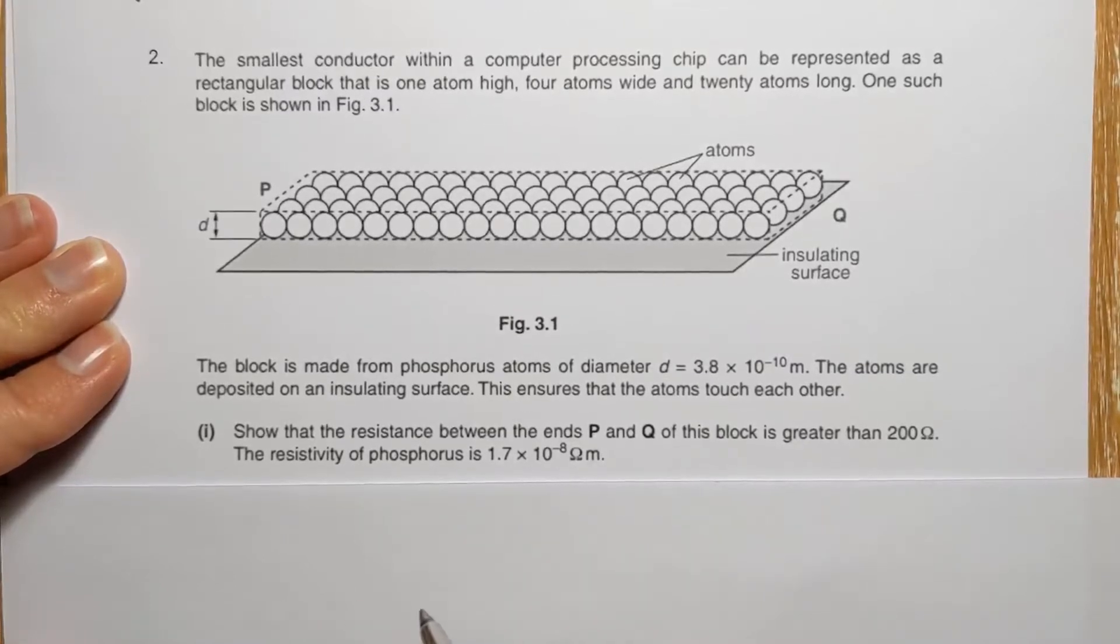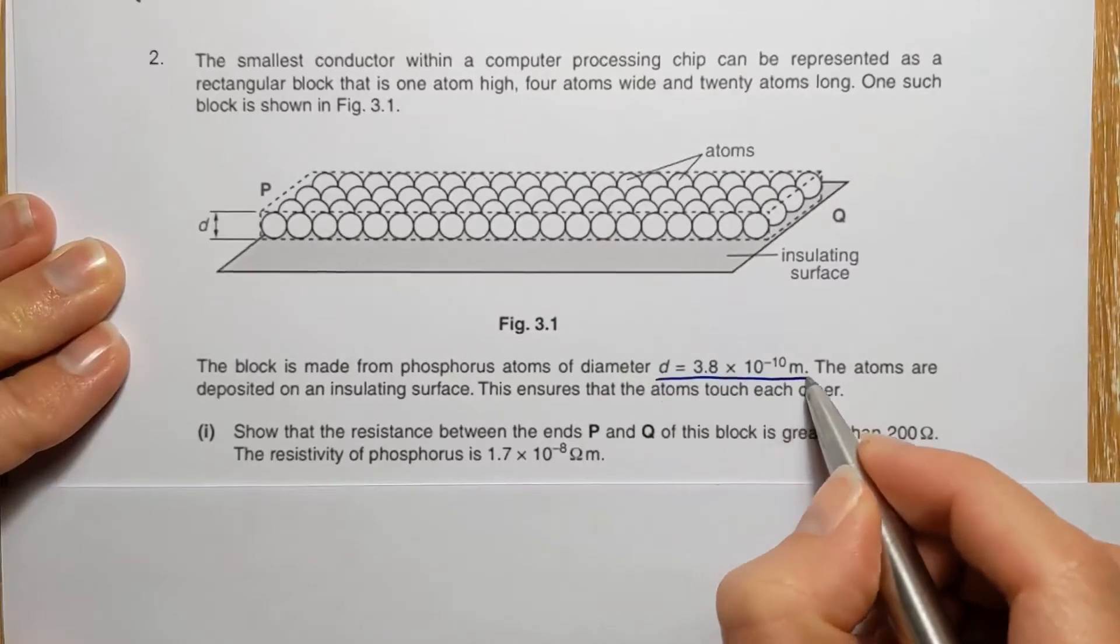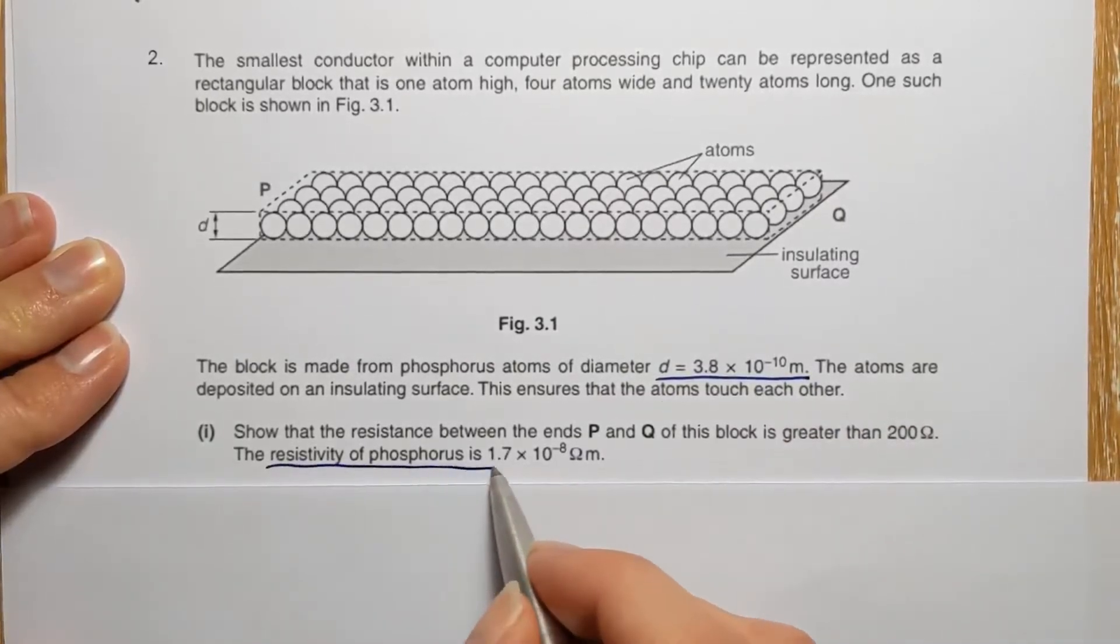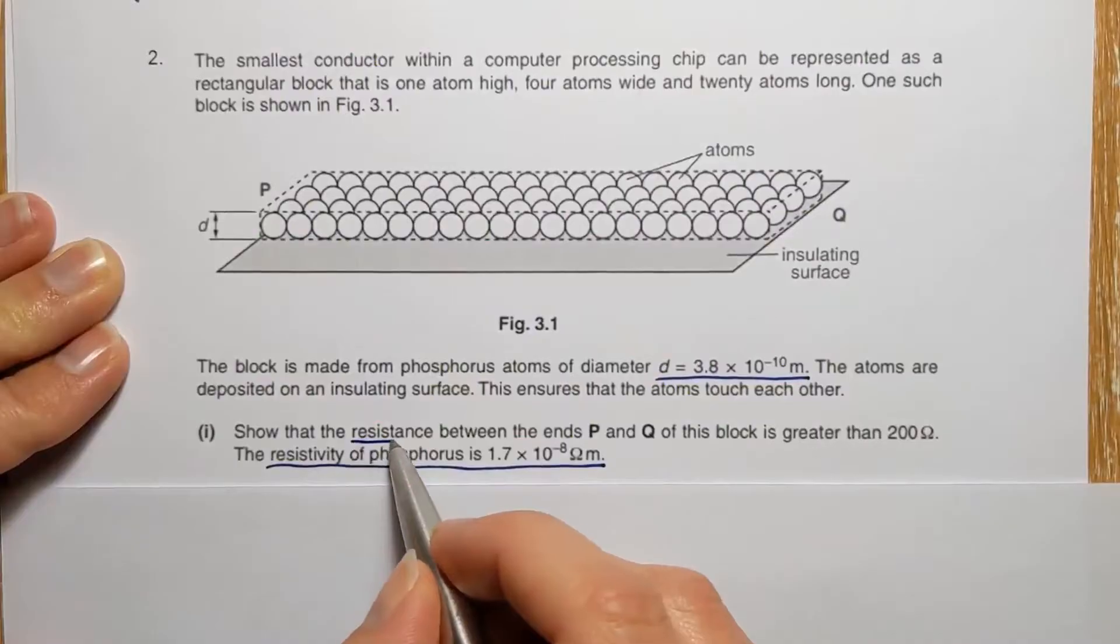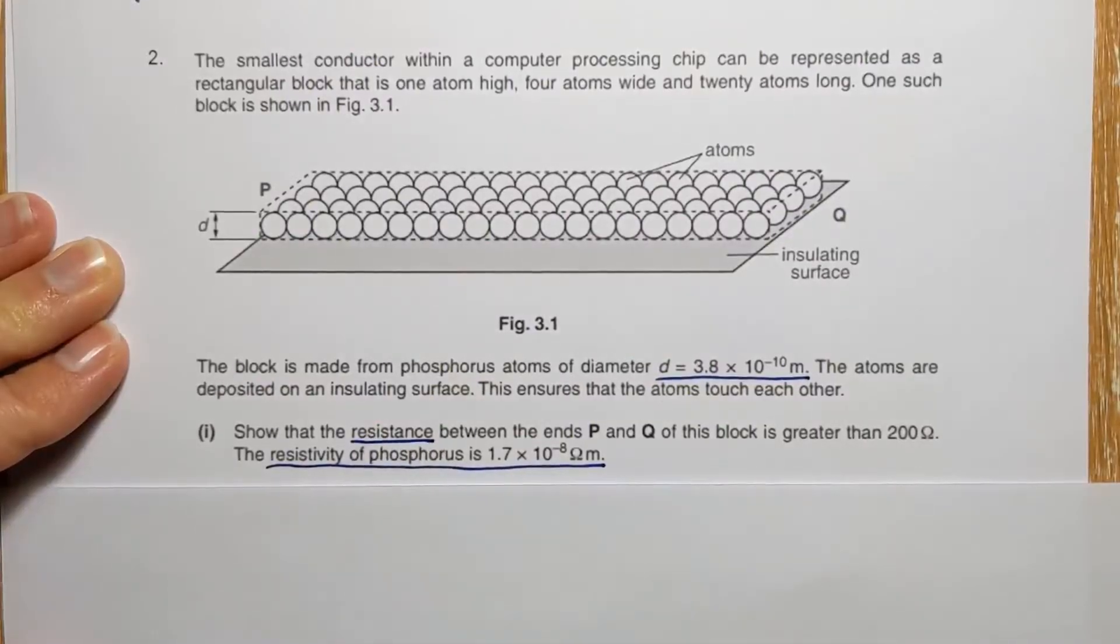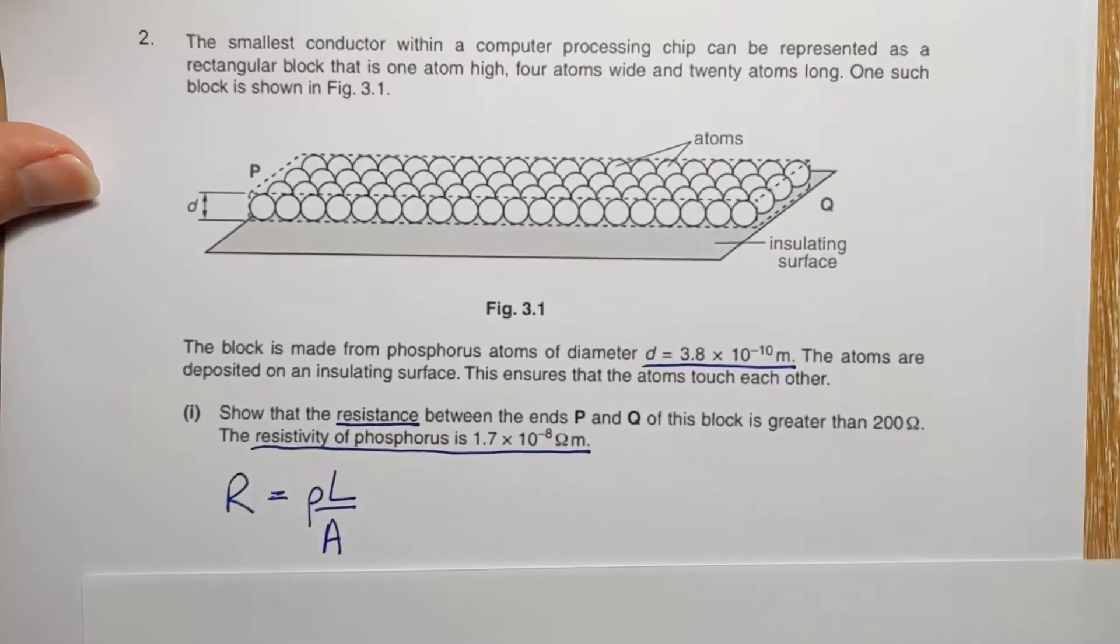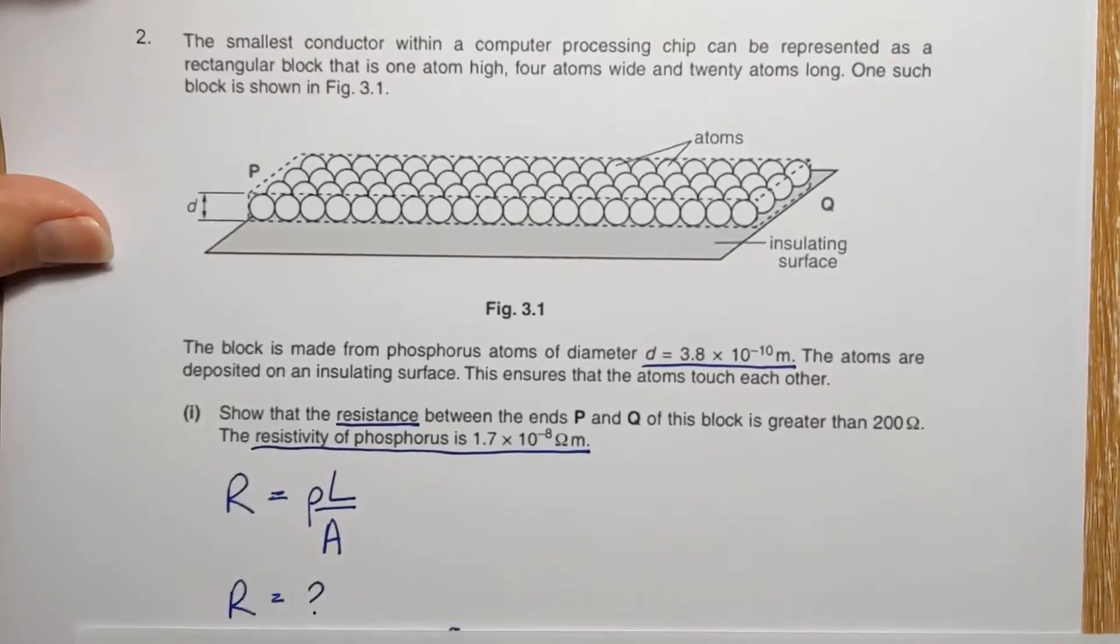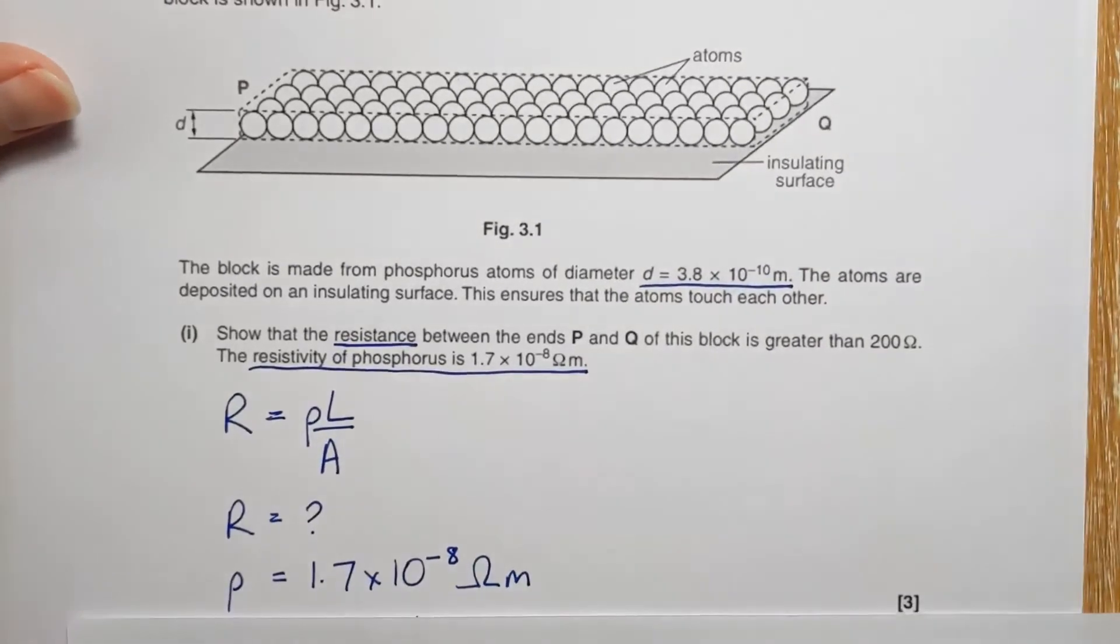So we look at our numbers that we've been given here. We've got the diameter there and we've got the resistivity here. And we're being asked to find the resistance. So we've got the resistivity formula is definitely the one we want. R is what we're looking for. Resistivity, we're told.